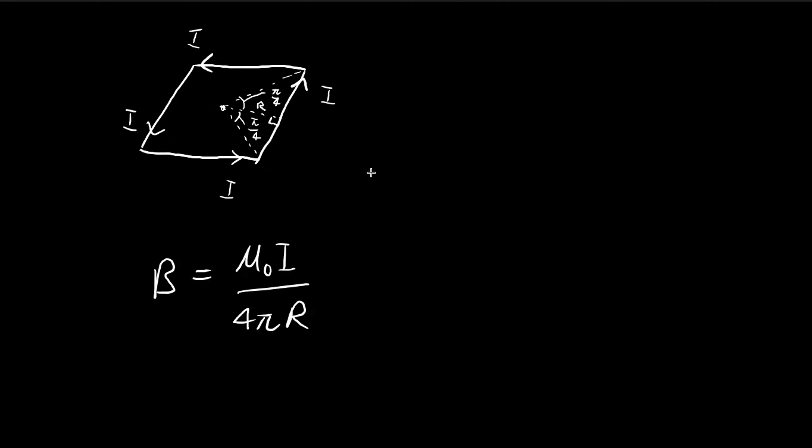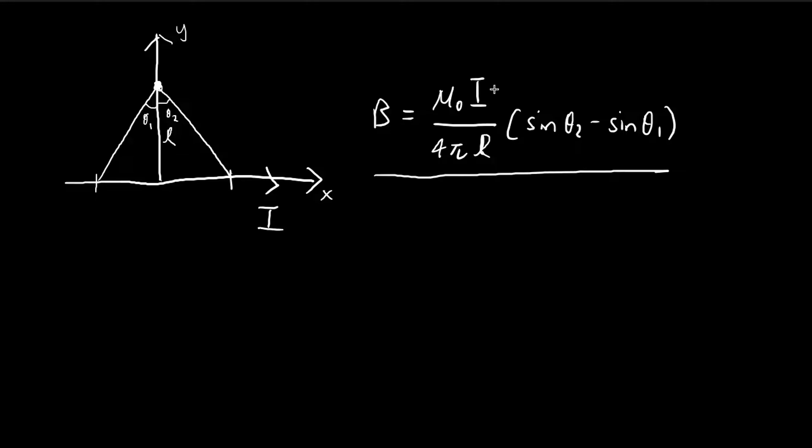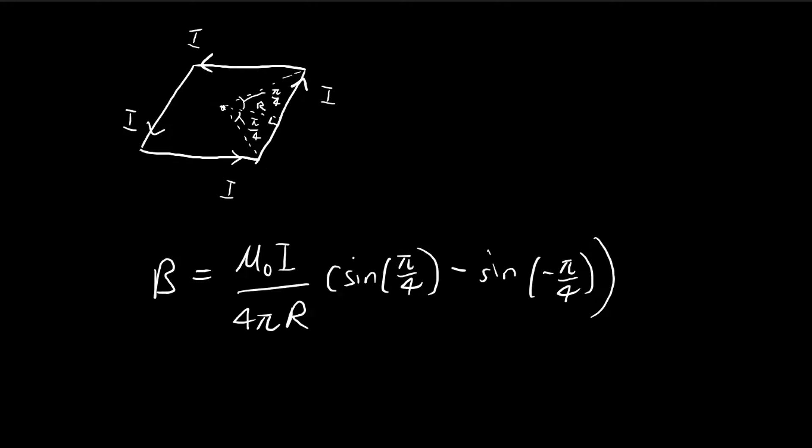If you apply this formula, you get sin(π/4) minus sin(-π/4). So there's a negative inside the sine, and this is a consequence of the way you derive this formula when you use calculus. If you go to this side of the axis, you need to start using negative angles.